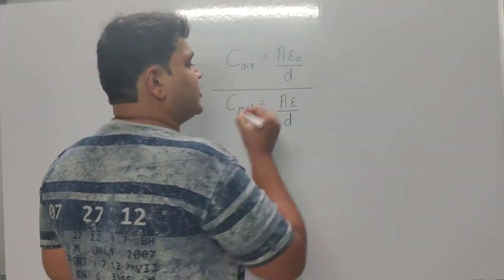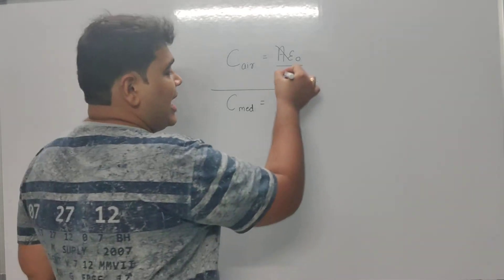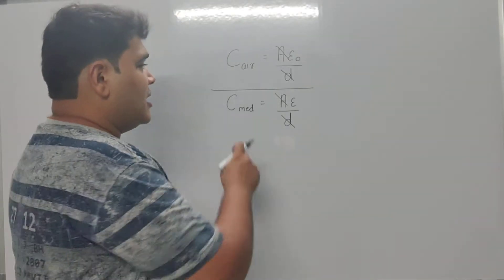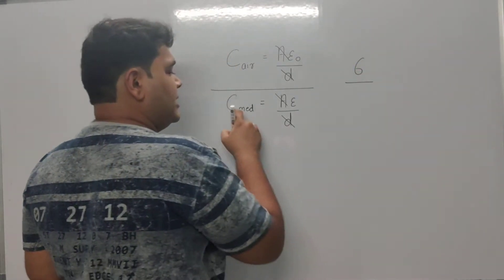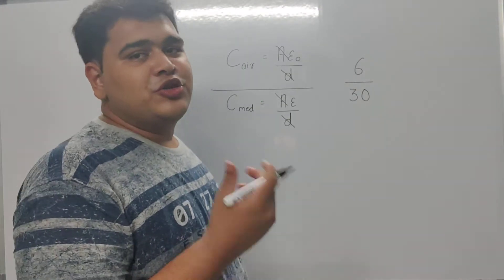If we take the ratio of the two capacitances, the area and distance remain the same so they cancel out. C in air is given as 6, C in the medium is given as 30. We're not writing the units because they're the same.